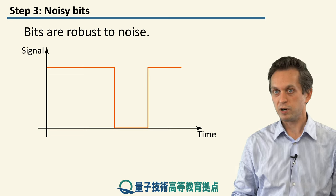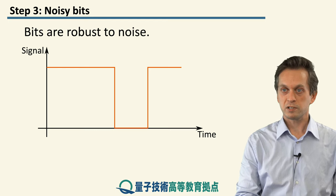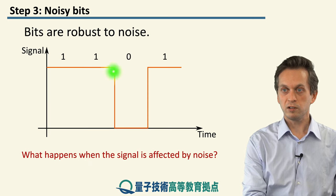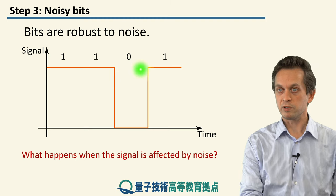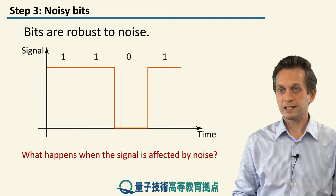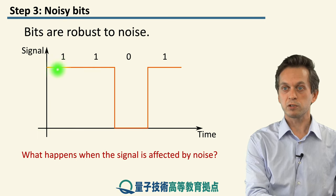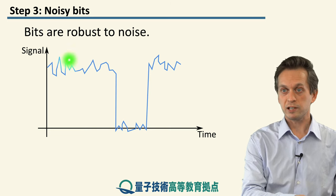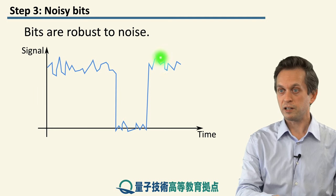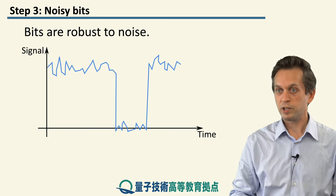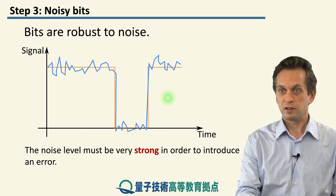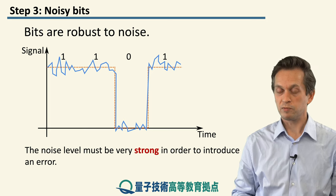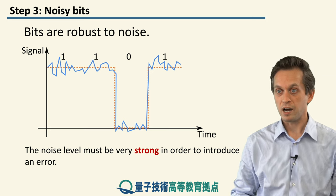Digital signals are robust to noise — let's re-examine how a bit is robust to noise. Consider a particular message represented by a time-varying signal: for some time t the signal is on, representing 1, then another 1, then the signal is absent giving a 0, then another 1. This is a clean signal whose value does not change within each time slot. When we apply noise, in a real-life situation you get a random-looking line, but everyone can still recognize the original message as 1, 1, 0, 1. For noise to introduce an error, it must be very, very strong. This means digital signals and bits are very robust to noise.